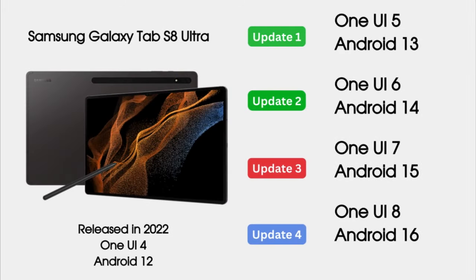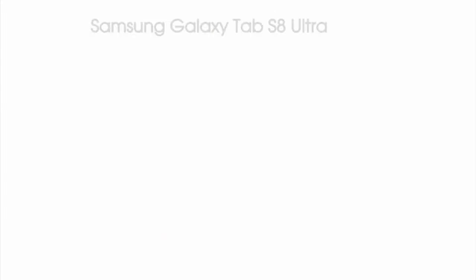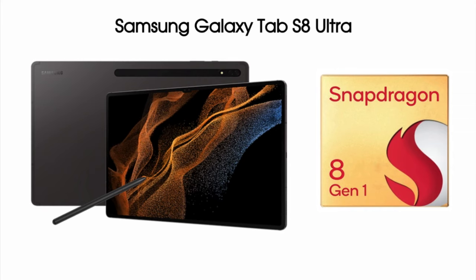The Galaxy Tab S8 Ultra was released in 2022 with Android 12 and has received two major Android updates. This One UI 7 Android 15 update will be the third major Android and One UI update for the Galaxy Tab S8 Ultra. It will get Android updates until Android 16, as the Galaxy Tab S8 Ultra is only eligible for four major Android updates.